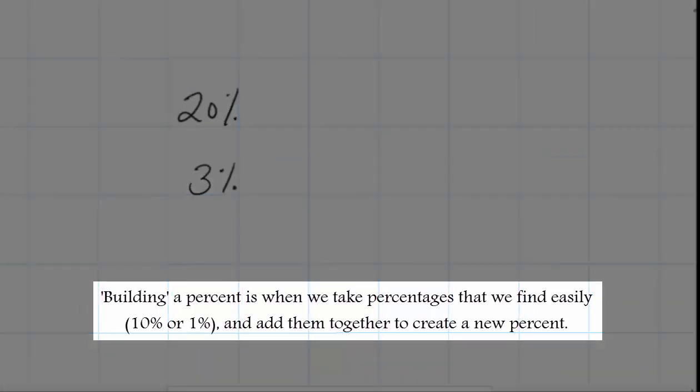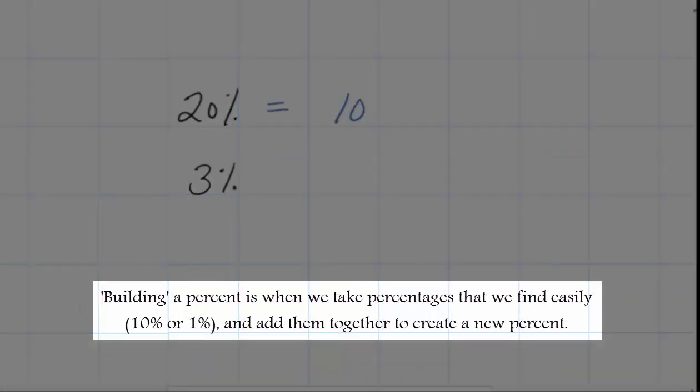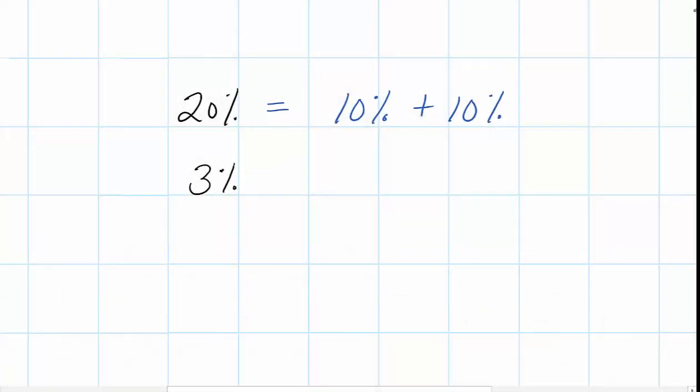Alright, so we're going to get into other percents other than 100, 10, and 1. And what students need to understand is that we can take percentages and add them up to form other percentages. To find 20%, we can take whatever 10% of a number is and add 10% twice. I love using addition when doing this because students can grasp that. To form 3%, we can take 1% of a number and just add it together three times.